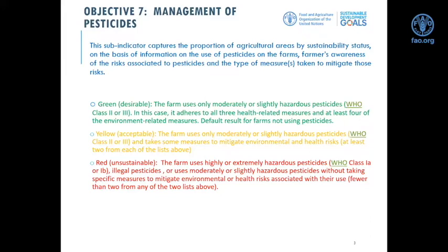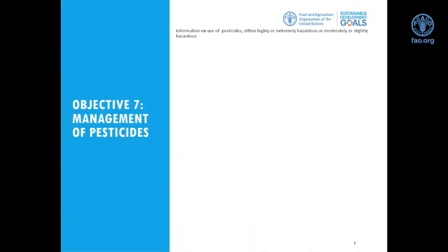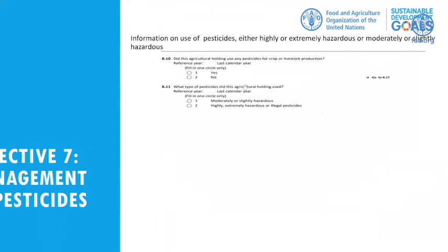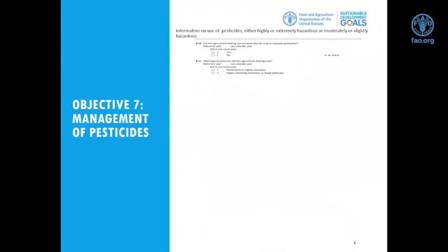To summarize: green requires three health-related measures and at least four environmental measures adopted. If only two from each list are adopted, the area is acceptable. If fewer than two, or if highly or extremely hazardous pesticide is used, the area is unsustainable. We find the relevant information in questions B10 and B11, which ask whether pesticides for crop and livestock production are used and the type of pesticide used.